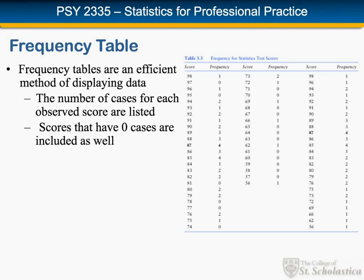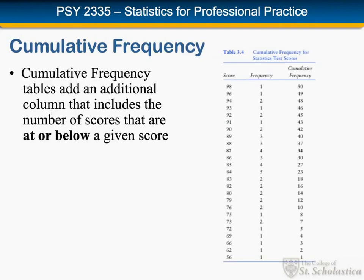In a cumulative frequency distribution, two things have happened. First, we've eliminated the lines where nobody had the score, so all of the frequencies are one or above — there are no zeros. But the most important thing is that beginning with the lowest score, which in this table is at the bottom, we have started adding up in another column. We've accumulated the frequencies, so each entry adds the current line to the sum of all the previous lines, until at the very top we see a total of 50 scores.